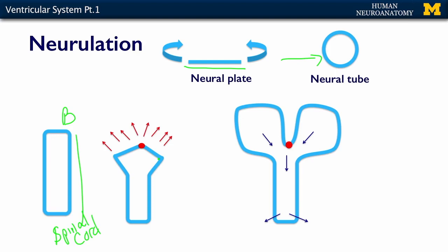Cell division is going to take off, and what happens is you get a big expansion of the front part of the brain. The bottom — this middle section — stays firmly in place, and so as these cells divide and expand, you end up with two cortical bubbles. This is going to be your cortex — your left hemisphere and your right hemisphere.